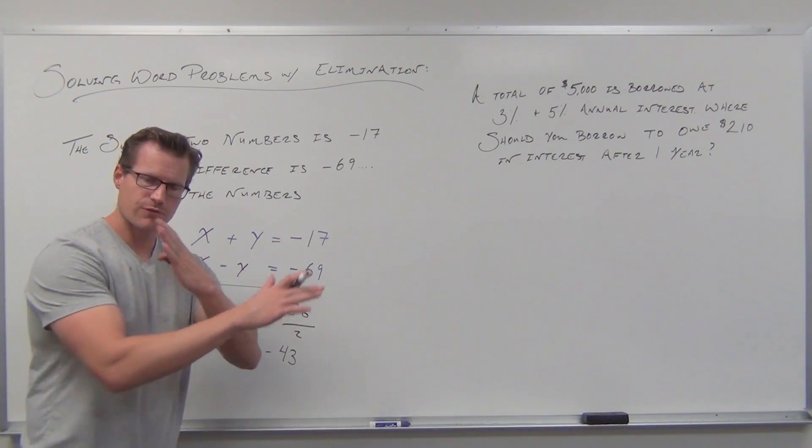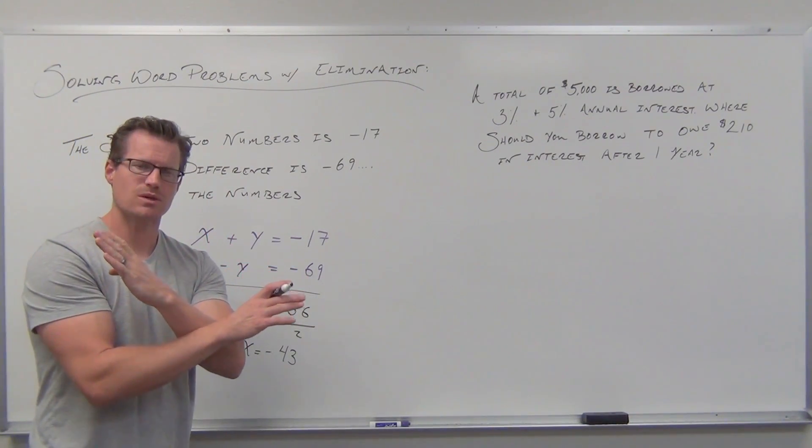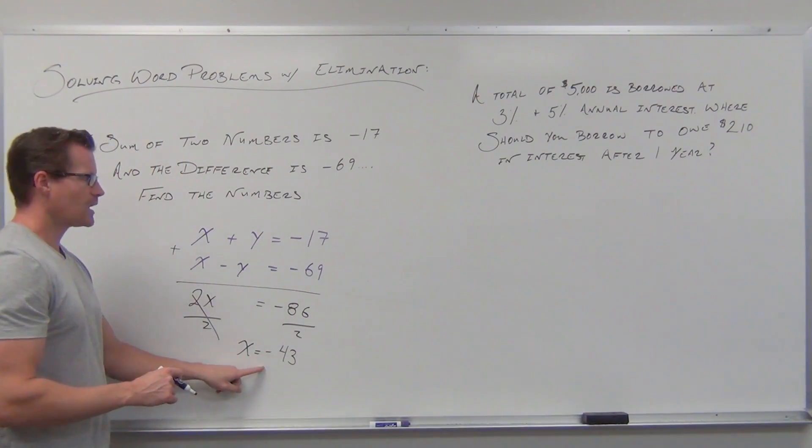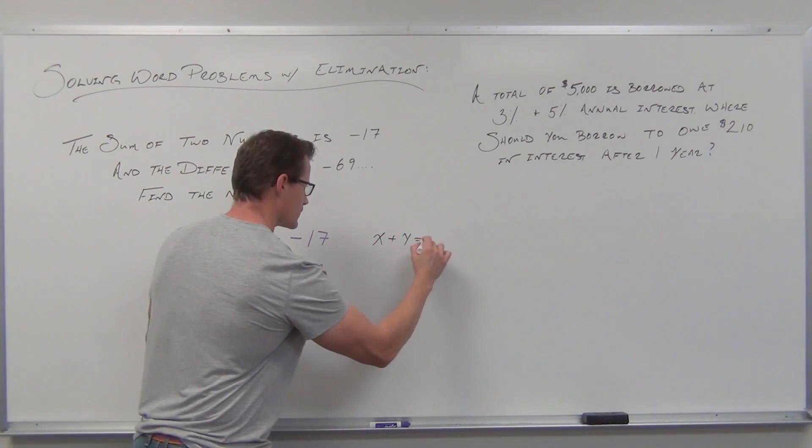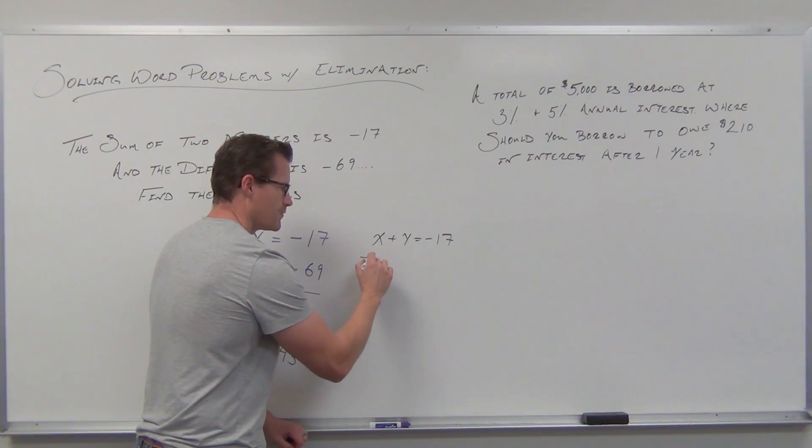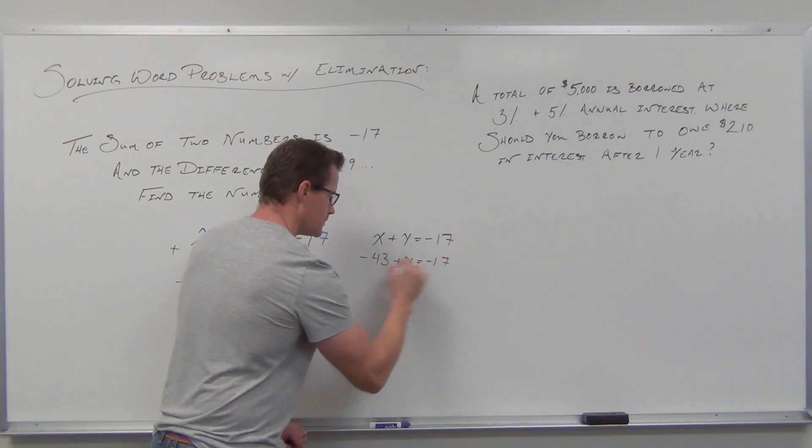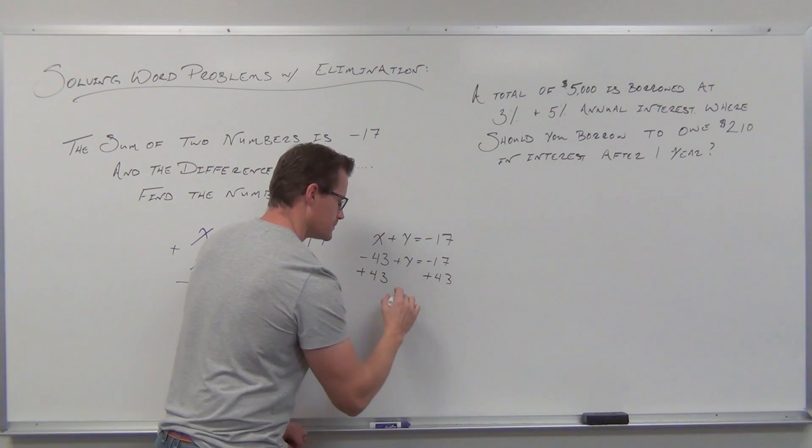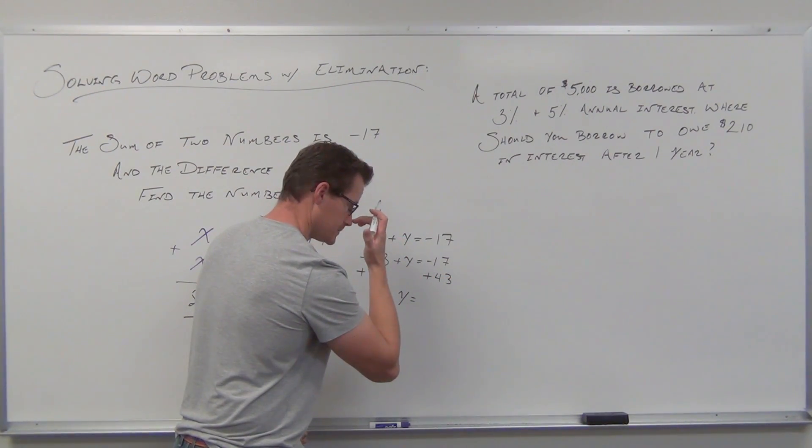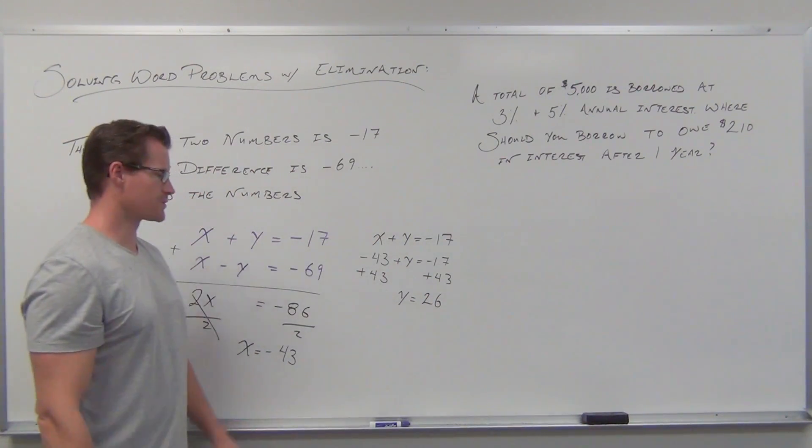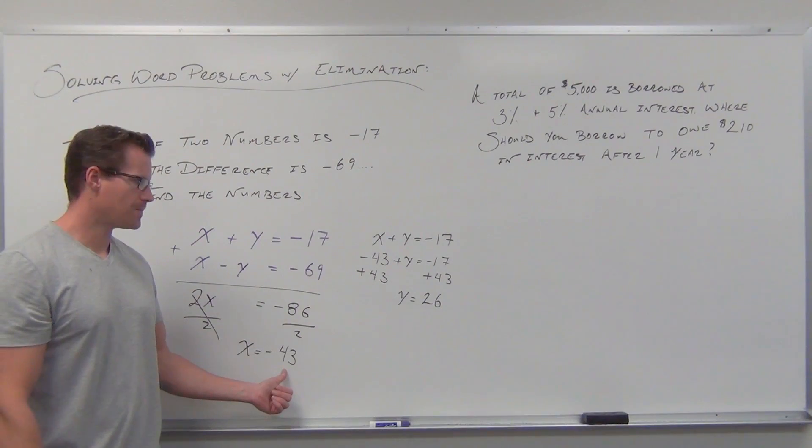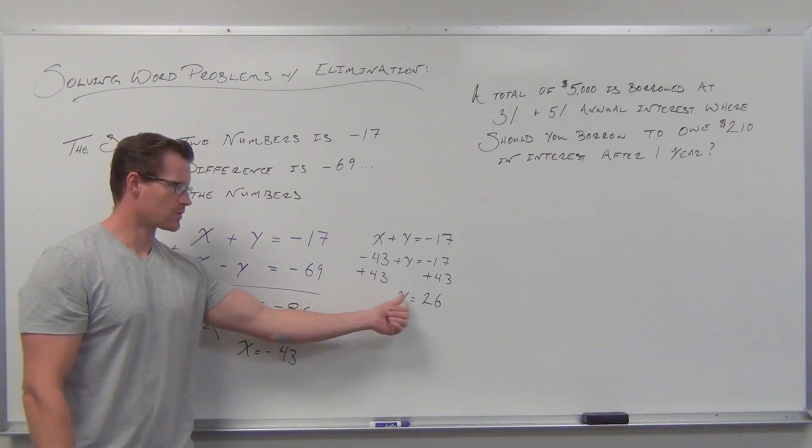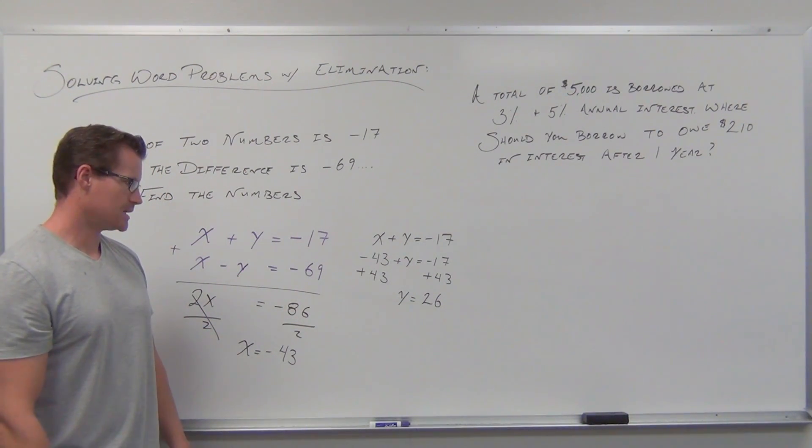We're solving for a point of intersection, which gives us one value. We know one number is -43. If we use one of our original equations and substitute -43 for x, adding 43 to both sides, we get y = positive 26.